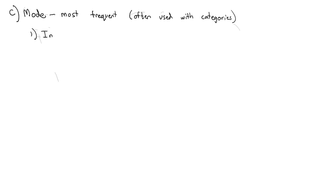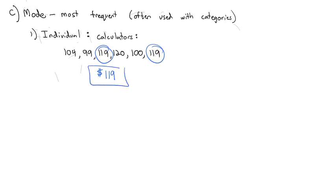With individual values, you'd find it just like you'd expect. We talked about the calculators. Calculator values were 104, 99, 119, 120, 100, and 119. And you can see, just by looking at this data, the number 119 occurs twice, and so the most frequently occurring calculator value is $119. And because it happens more often, you might expect to pay 119 more than the center, which was closer to 110 or 111. So sometimes the mode is more useful because you're going to probably expect to pay the mode. It's the most common answer.